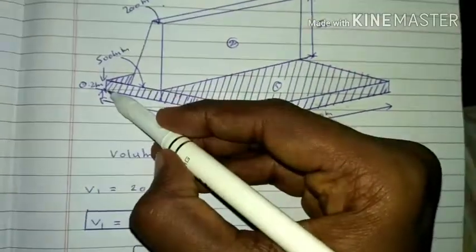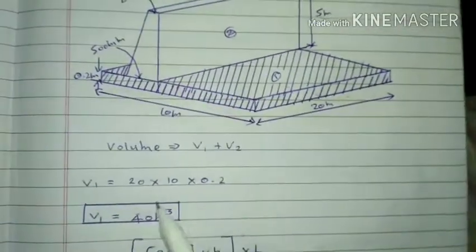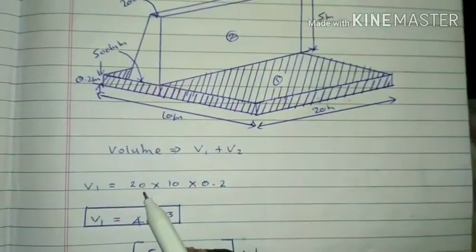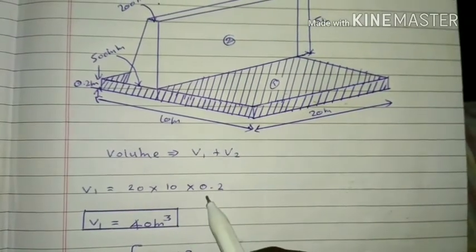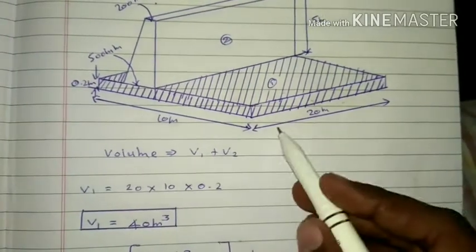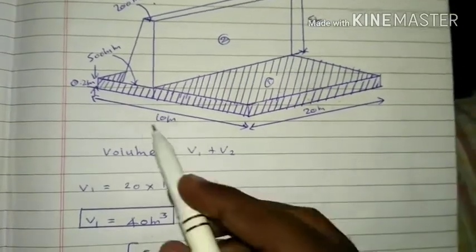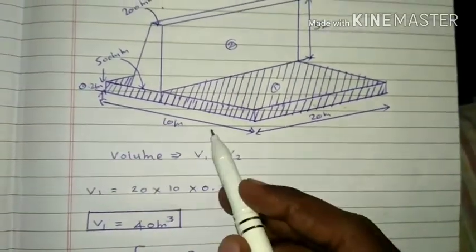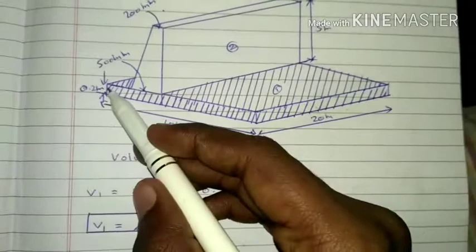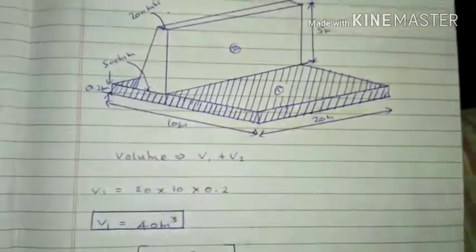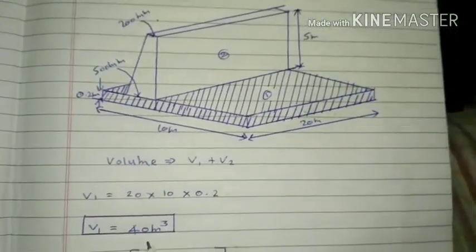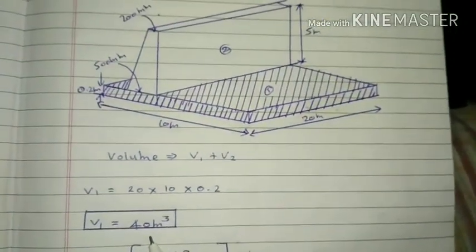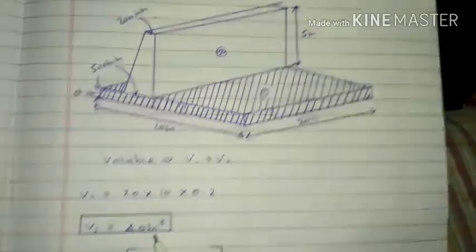The volume breadth is 10m, thickness 0.2m. So the calculation is 20 by 10 by 0.2. If you do this, we will use the volume. We want to use 40m cubed.